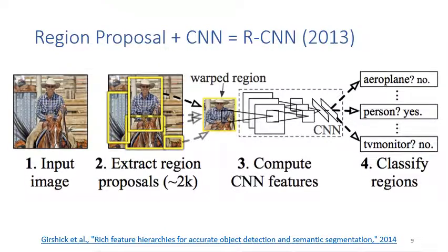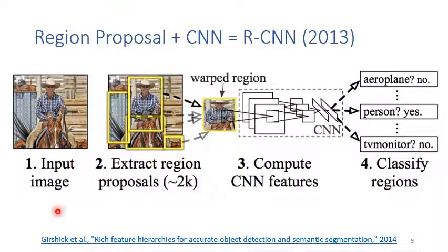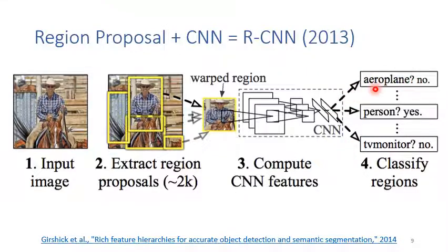The first deep learning object detector combined the traditional region proposal algorithm with a convolutional neural network classifier. The detector is called RCNN — Region-based Convolutional Neural Networks. It first extracts region proposals using selective search, a traditional computer vision algorithm. It extracts around 2,000 regions, then applies the convolutional neural network to extract features and then performs classification, classifying the image into one of the predefined classes.